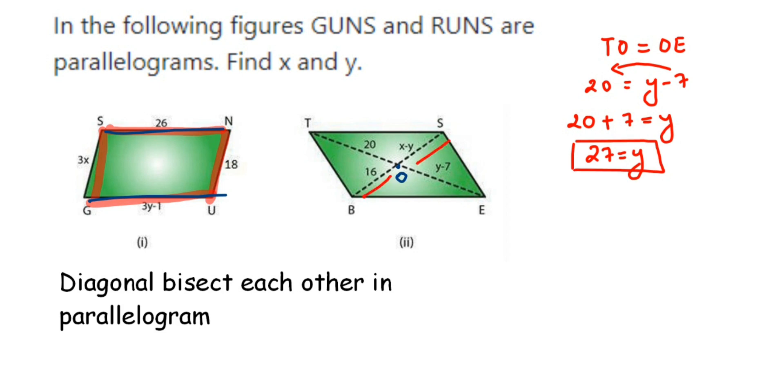Now we have to find the other one, so BO will be equal to OS. BO value is 16, so 16 is equal to OS, which is x minus y. Here we have to use the value of y which we calculated as 27. So 16 is equal to x minus 27. Transpose minus 27 to the other side, it comes in addition. 16 plus 27 is equal to x, which is 43. Therefore x is equal to 43.